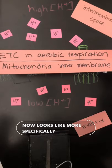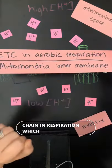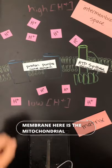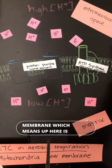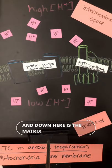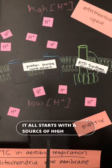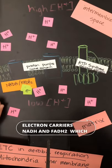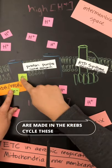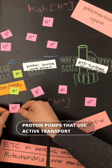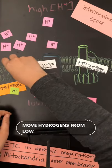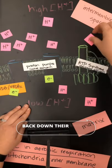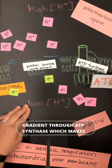Now let's look more specifically at the electron transport chain in respiration, which occurs in the mitochondrial inner membrane. This membrane here is the mitochondrial inner membrane, which means up here is the intermembrane space and down here is the matrix. It all starts with a source of high energy electrons, which are the high energy electron carriers NADH and FADH2, which were made in the Krebs cycle. These donate electrons to the proton pumps, which use active transport to move hydrogens from low to high concentration. Hydrogens then move back down their concentration gradient through ATP synthase, which makes ATP.